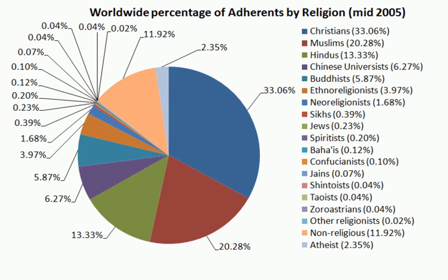During the Middle Vedic period, the mantras of the Yajurveda and the older Brahmana texts were composed. The Brahmins became powerful intermediaries. Historical roots of Jainism in India are traced back to the 9th century BC with the rise of Parshvanatha and his non-violent philosophy.